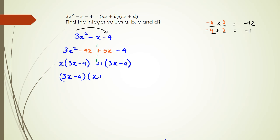And what I have is (3x - 4)(x + 1). Remember that this is (ax + b)(cx + d).